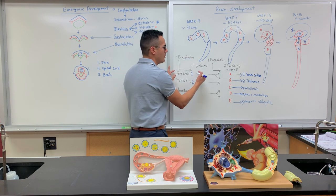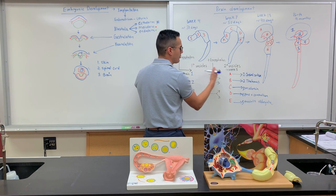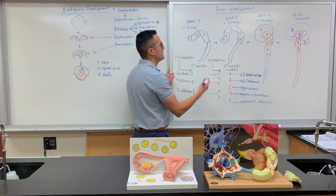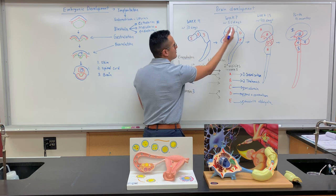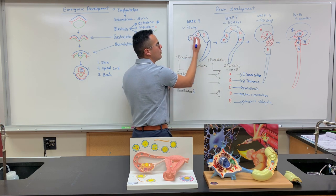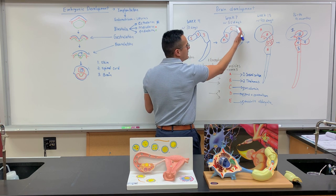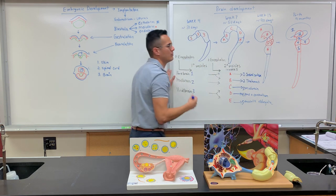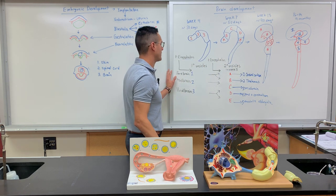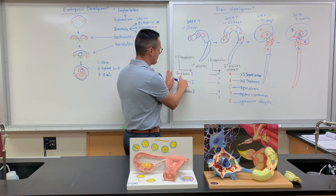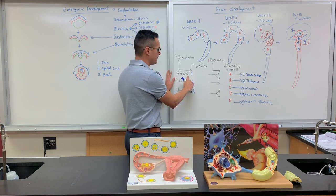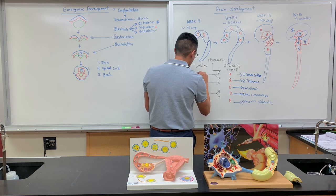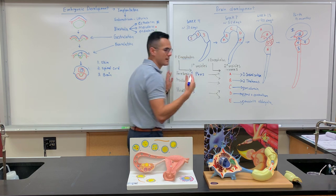We're going to see what develops into what — going from primary to secondary vesicles — based on the timeline, going from week four to week seven, week thirteen, until we finally get to birth around nine months. The first part is the forebrain, and the term used to describe the forebrain is the prosencephalon.